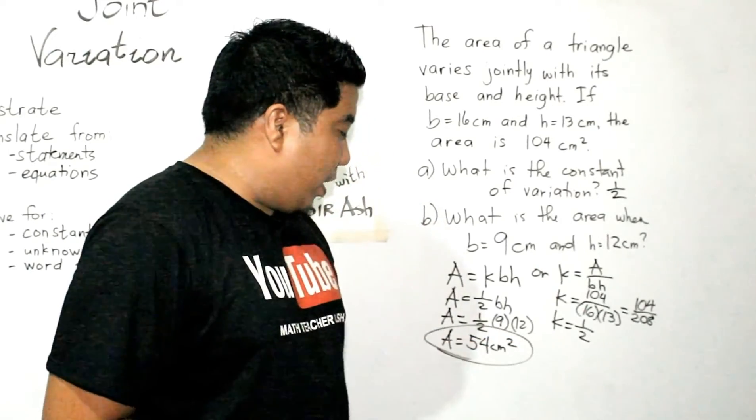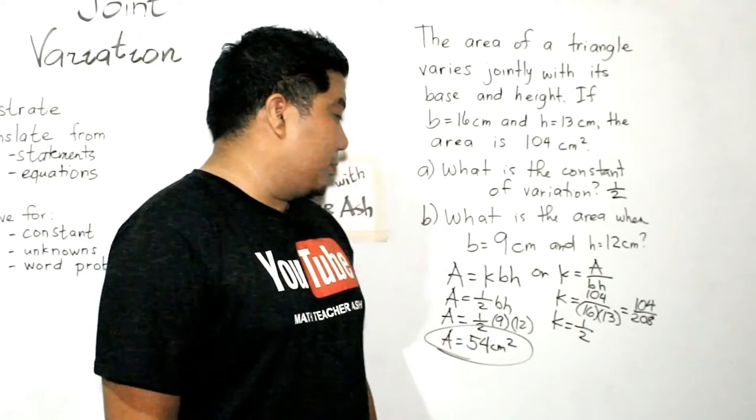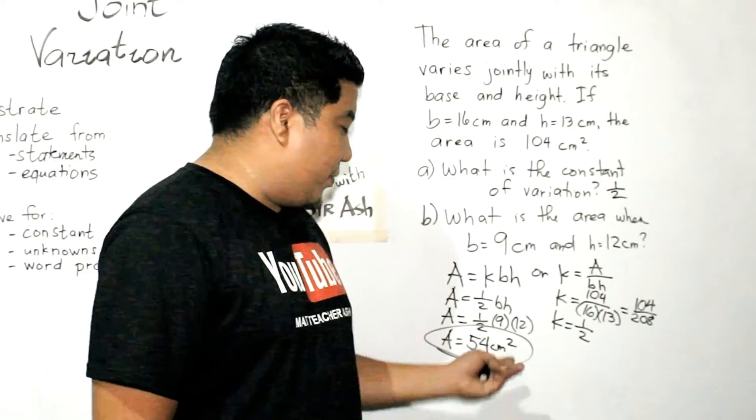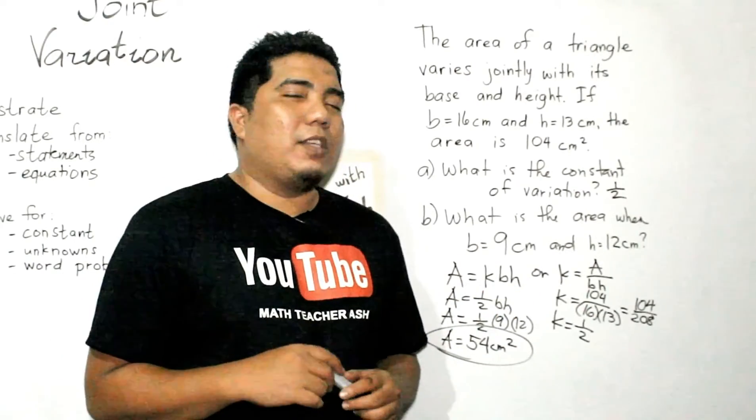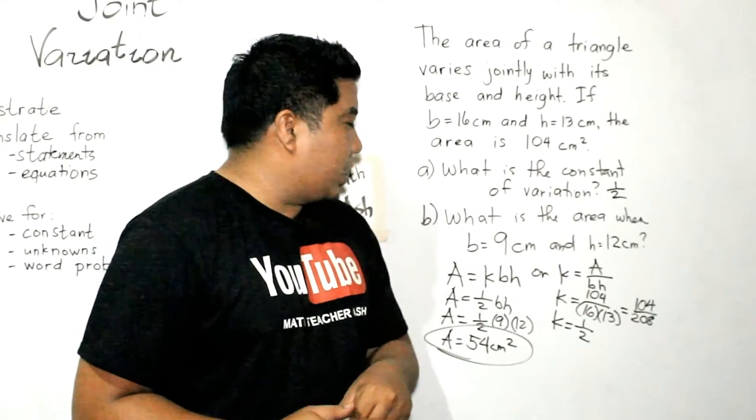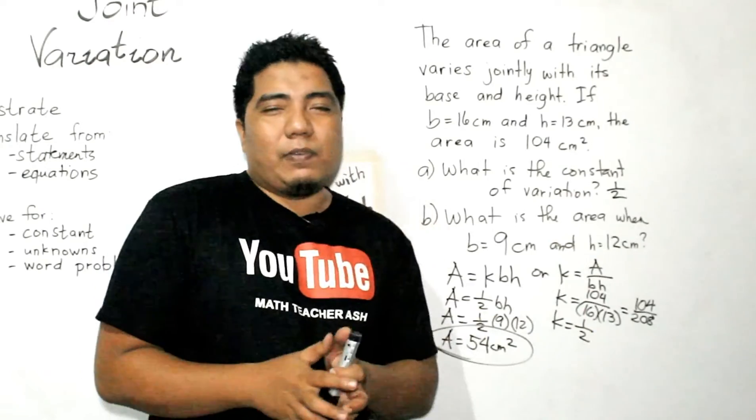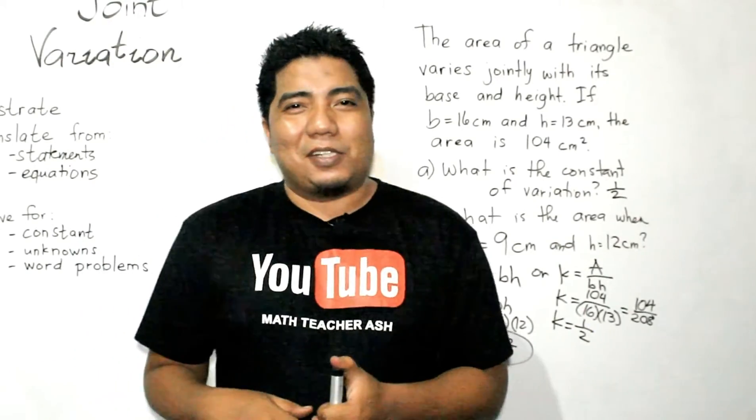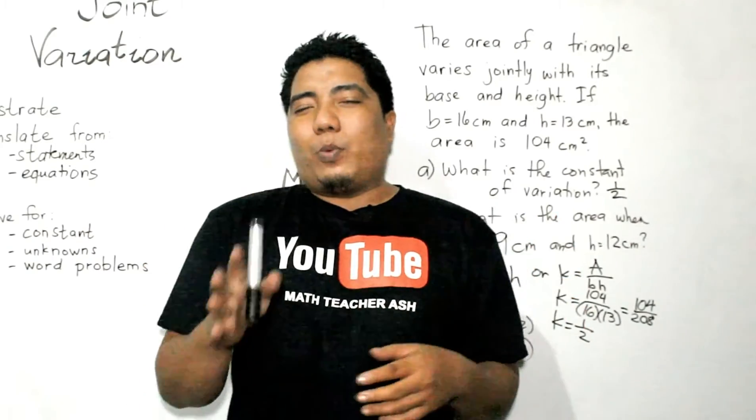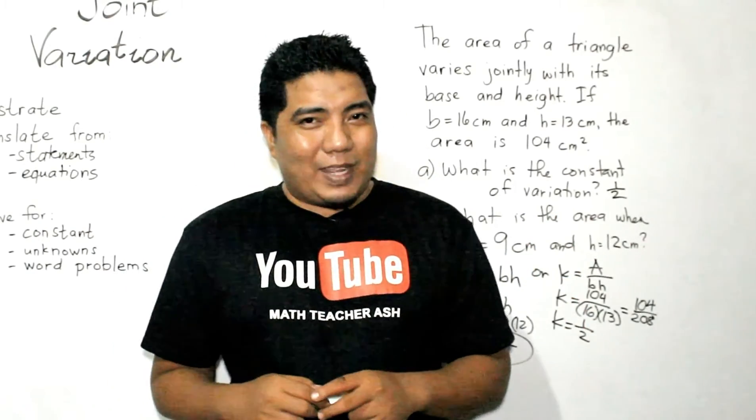Because 9 times 12, that is 108. And if you divide it by 2, or you multiply it by one half, the answer is 54 square centimeters. So, we have our answer for A as one half, and we have our answer for B, the area, which is 54 square centimeters. Easy, right? Now, this is the time that I will challenge you whether you have understood our topic, and here it is.